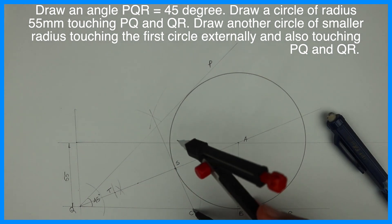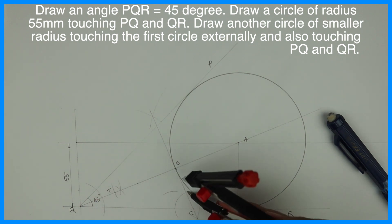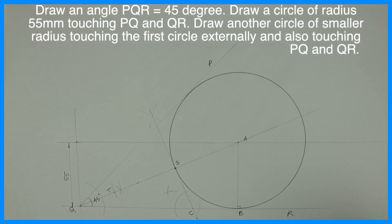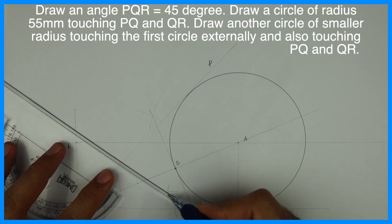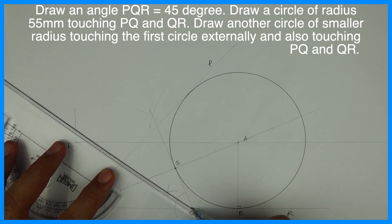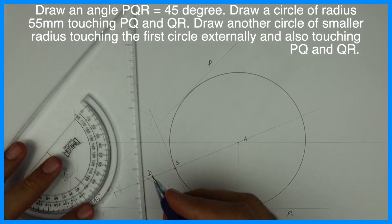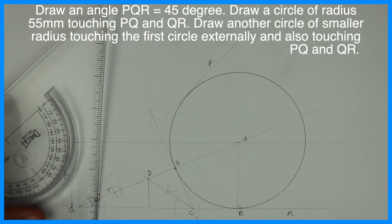Now we need to bisect this angle. So this is point D. From there you go down. So this is point D. This will be the radius of the smaller circle.